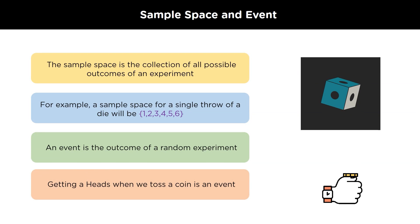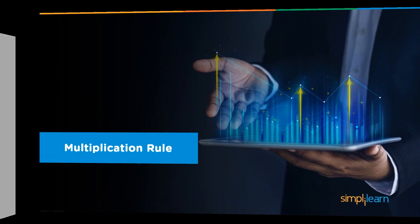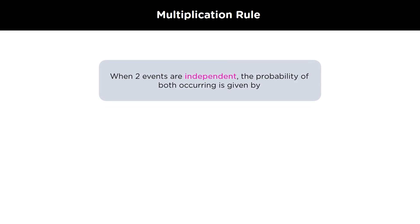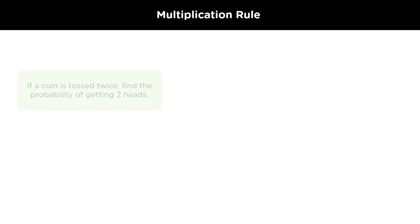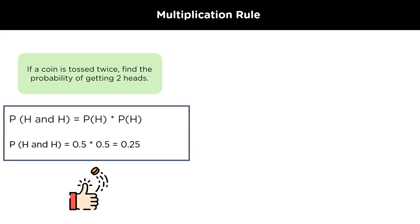Getting a hit when we toss a coin is an event. Now, we will discuss the multiplication rule in probability. The multiplication rule says that when two events are independent, the probability of both occurring simultaneously is given by: P(A ∩ B) = P(A) × P(B). Let's understand this with an example. If a coin is tossed twice, what will be the probability of getting two heads? In a single throw, the probability of getting a head is 1/2, that is 0.5. So, the probability of getting two heads in both the coins will be 0.5 × 0.5 = 0.25.